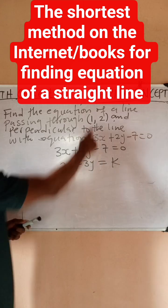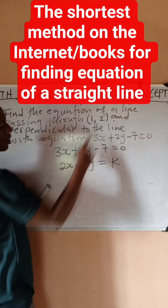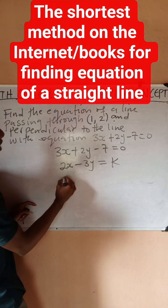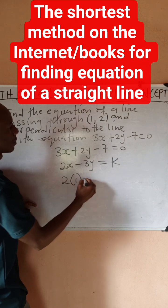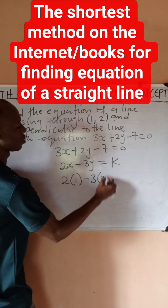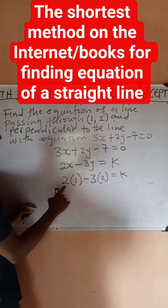So when I do that I would have 2 into 1 minus 3 into 2 equals k. So that 2 times 1 is 2 minus 3 times 2 is 6 equals k.